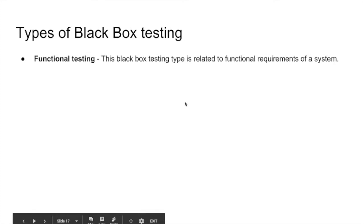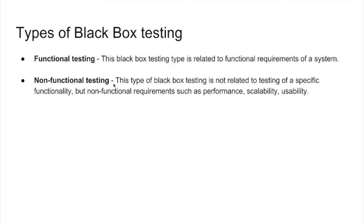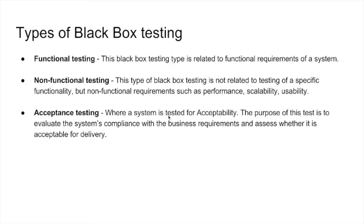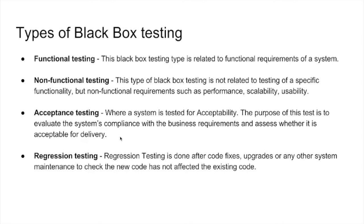Now let's see the types of black box testing. There are many types, but we will cover the most prominent ones. First is functional testing, where the specific functionality of the software is tested. In non-functional testing, non-functional requirements such as performance, scalability, and usability are tested. Next is acceptance testing, where a system is tested for acceptability — when a software is in the final stage of release, it is tested whether it satisfies the software requirements specified by the client and whether it is acceptable for delivery. Next is regression testing — once the software is delivered and if there is a code change, such as bug fixes, upgrades, or maintenance, it is checked whether the new code affects the existing code or features.